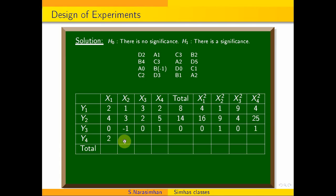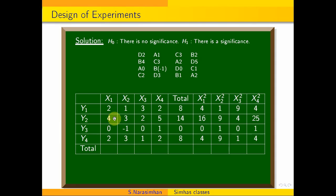The fourth row is 2, 3, 1, 2, with a row total of 8. The squares are: 2 squared is 4, 3 squared is 9, 1 squared is 1, 2 squared is 4. Adding column-wise, we get: 8, 6, 6, 10. The grand total is 30.